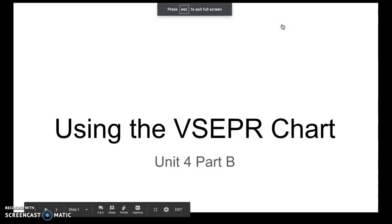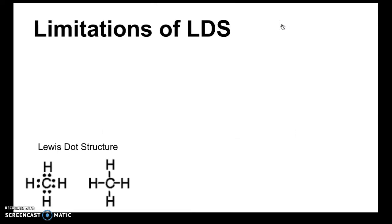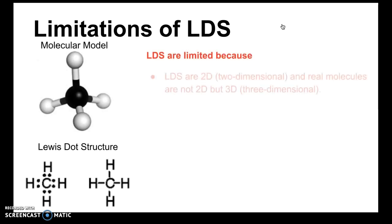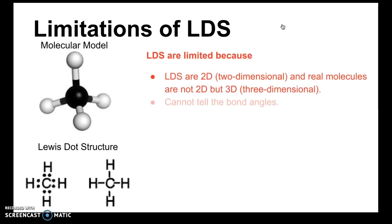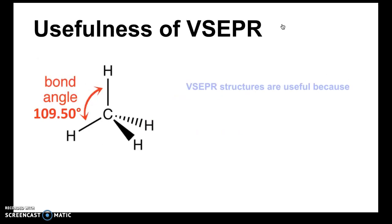Welcome to the video on using the VSEPR chart. In this video I'll show you how to use the VSEPR chart to determine molecular geometry and electron domain geometry. Lewis dot structures are limited because they do not show us the shapes or bond angles — they're flat structures. With VSEPR structures we can predict both shapes and bond angles.